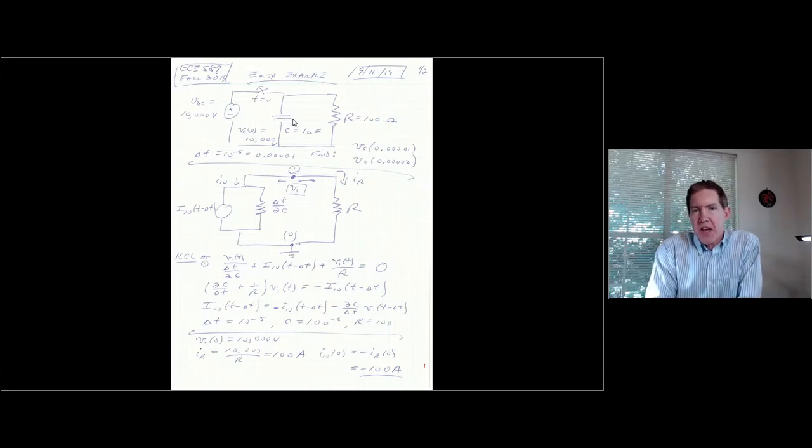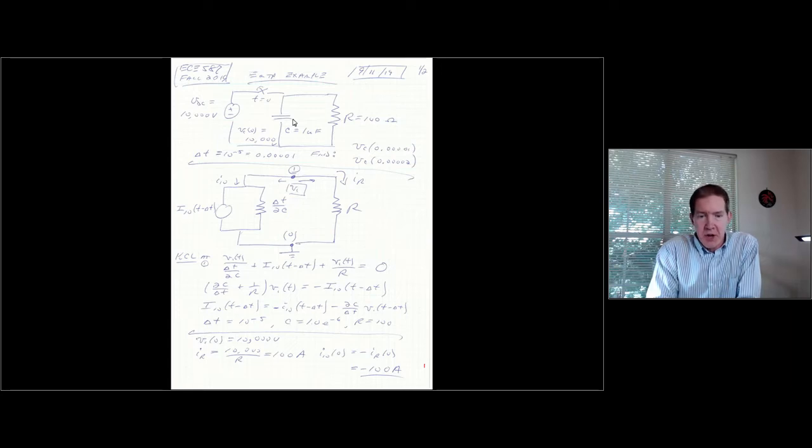As you recall, we had a 10,000 volt source. We had the switch closed initially, and what that would do is charge that capacitor up to 10,000 volts. And then the switch would open, and then the trapped charge in the capacitor would discharge, and eventually the resistance in the circuit would dissipate that charge.